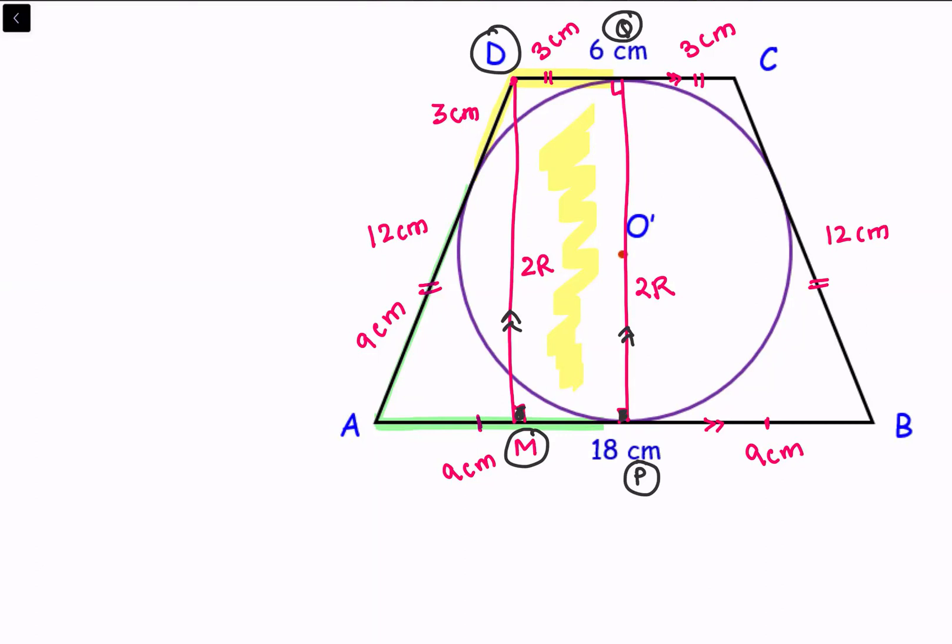Thus we can say that MP is nothing but 3 centimeter. And in turn AM is 6 centimeter.